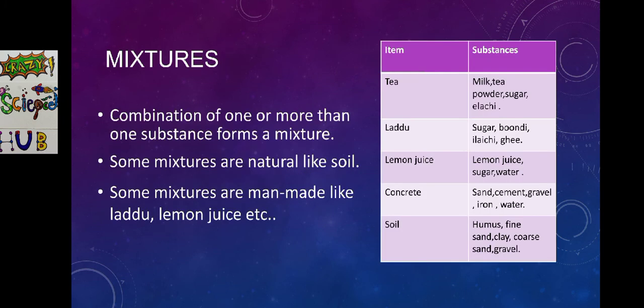This is another topic, that is mixtures, which is the main topic of our chapter 5. Combination of one or more than one substance forms a mixture. Here are some examples given for your reference. First one, tea. What is tea made up of? Milk, tea powder, sugar, elachi. What is a laddu made up of? Sugar, bundi, elachi, ghee. What is lemon juice made up of? Lemon juice, sugar, salt, water. What is concrete made up of? Sand, cement, gravel, iron and water. Soil is a mixture of humus, fine sand, clay, coarse sand and gravel. These are all the examples for mixtures.